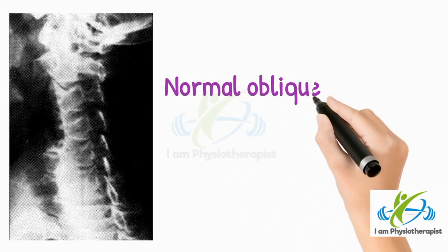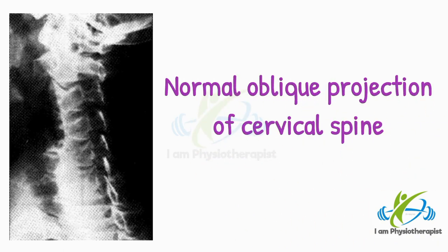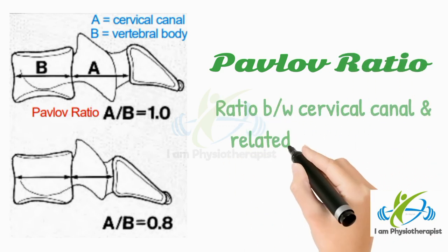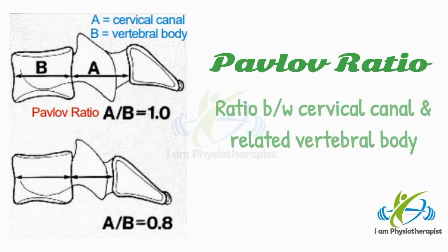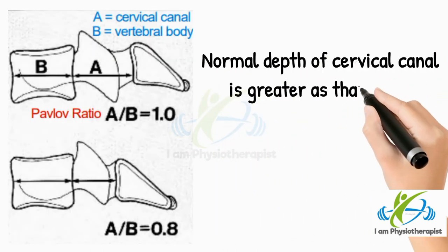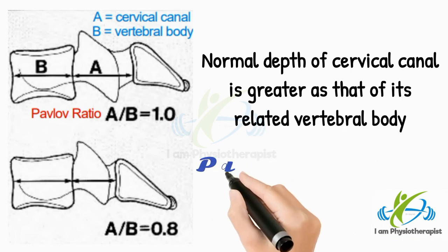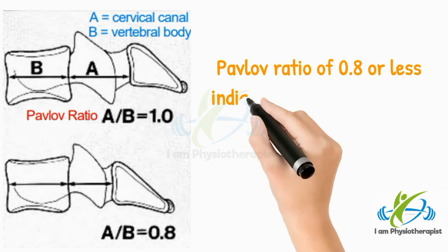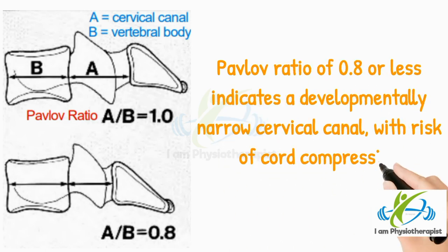This is the normal oblique projection of the cervical spine. In this radiograph, note the Pavlov ratio — the ratio between the cervical canal and its related vertebral body. Normally the depth of the cervical canal is greater than that of its related vertebral body, giving a Pavlov ratio of 1.0. A Pavlov ratio of 0.8 or less indicates a developmentally narrow cervical canal with risk of cord compression.